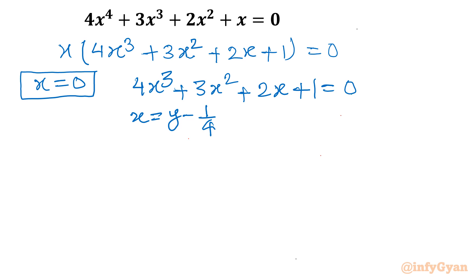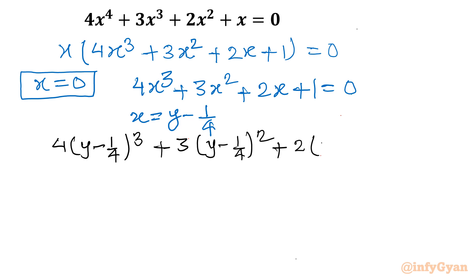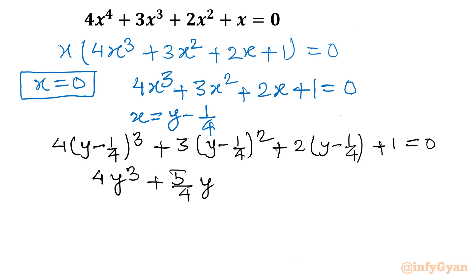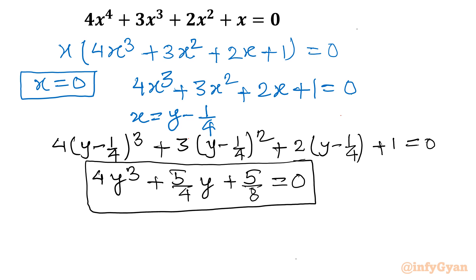Substituting x = y − 1/4 into the cubic gives: 4(y − 1/4)³ + 3(y − 1/4)² + 2(y − 1/4) + 1 = 0. After simplifying the left-hand side using algebraic identities and formulas, the equation becomes 4y³ + (5/4)y + 5/8 = 0. This is the depressed cubic equation.